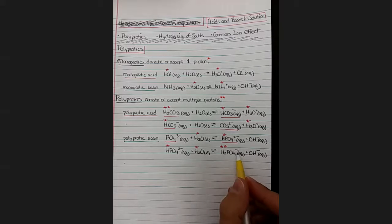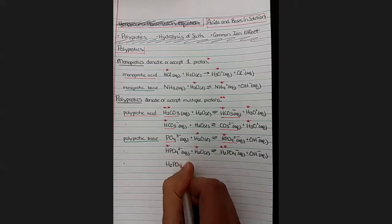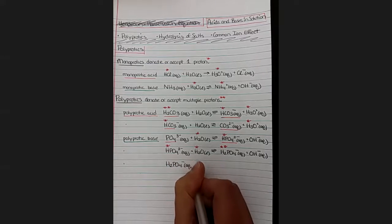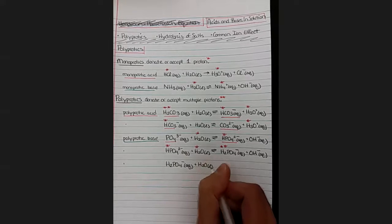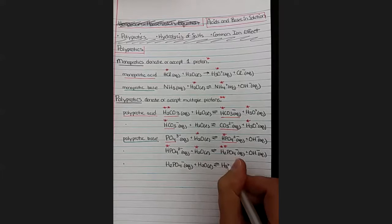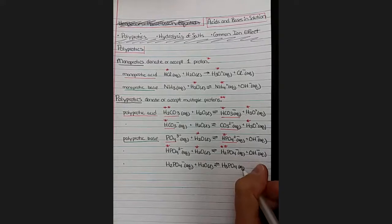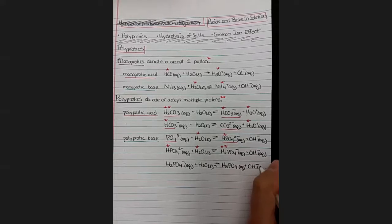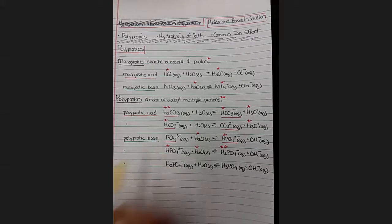And since there's a negative charge, we can even protonate it one more time. Put it in water and ionize it a third time to make H3PO4, a neutral compound. So there are three possible protonations that can happen. So this would be called a triprotic base.